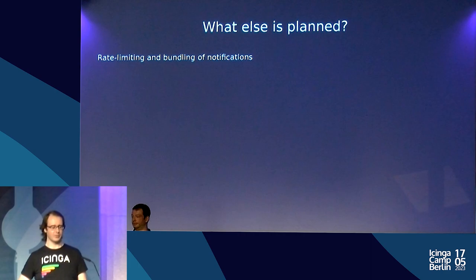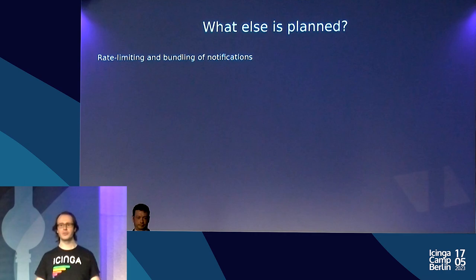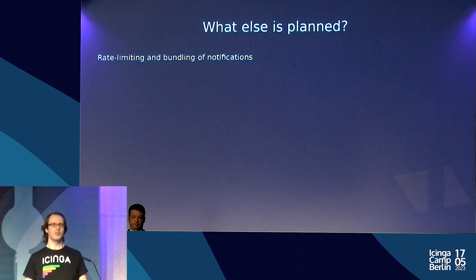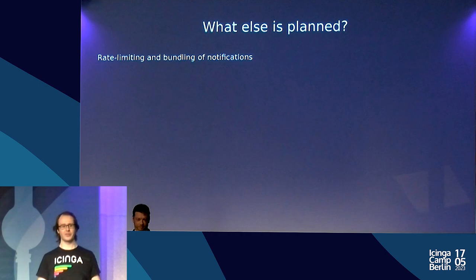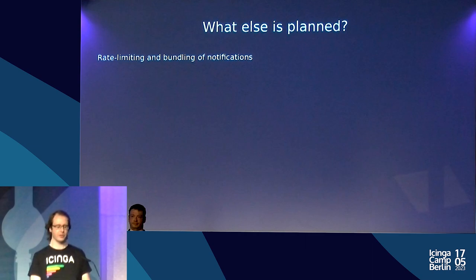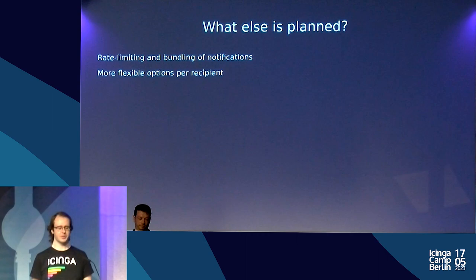Some planned features still missing include rate limiting and bundling of notifications. This means that if 20 hosts go down at the same time, there's often no value in individual notifications — it's more useful to get a single notification saying '20 things went down, look into the root cause,' especially when dependencies weren't modeled and monitoring didn't catch the actual root cause.